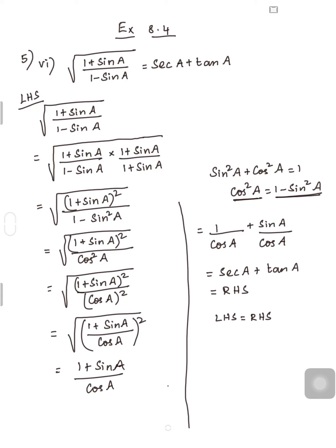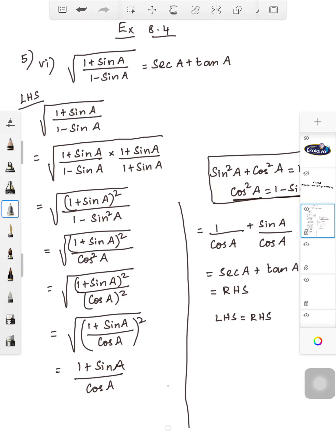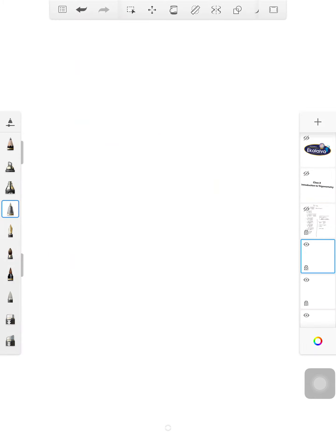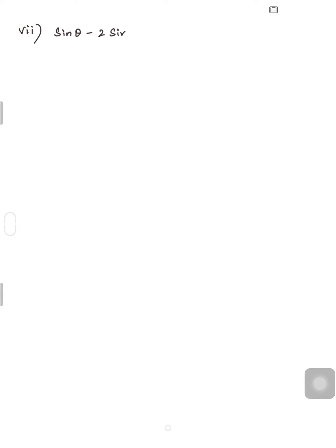Hope it is clear, children. You should be thorough with the identities while doing these problems. Now let me teach you the next sum, that is the 7th one: (sinθ - 2sin³θ) / (2cos³θ - cosθ) is equal to tanθ. So let me take the LHS.